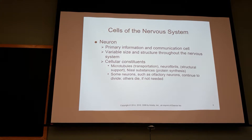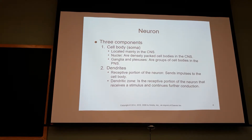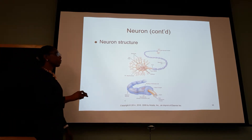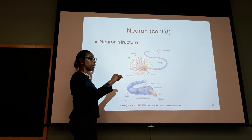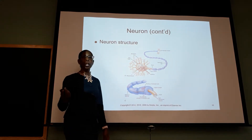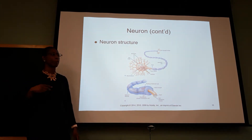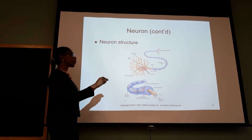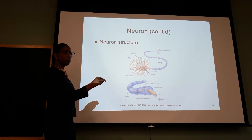Variable size and structure throughout the nervous system — the whole factory. When they die, they do not come back. So the neuron is made up of a soma, which is your cell body. You've heard neurologists talk about gray matter versus white matter — when they talk about gray matter, they're talking about this part of the cell: the soma.